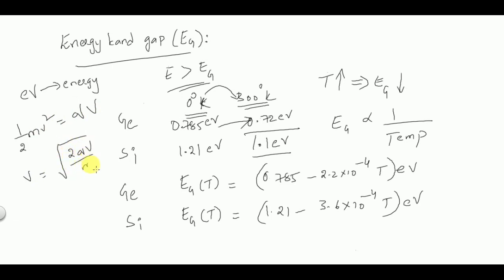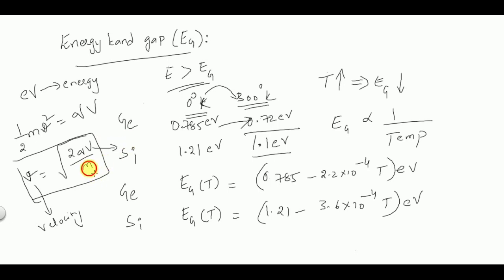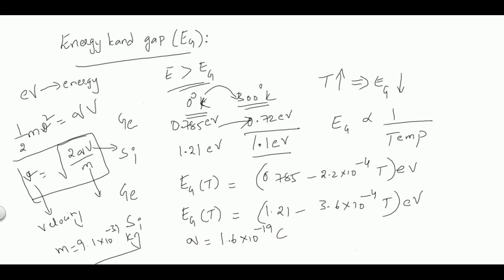The velocity of a fast-moving electron is given by v = √(2qV/m), where V is the potential difference applied and m is the mass of the electron, which is 9.1×10⁻³¹ kg. The charge of the electron q is 1.6×10⁻¹⁹ coulombs. Using this formula we can find the velocity of a fast-moving electron in a semiconductor.